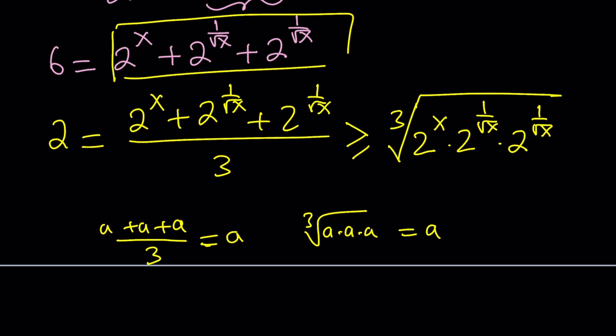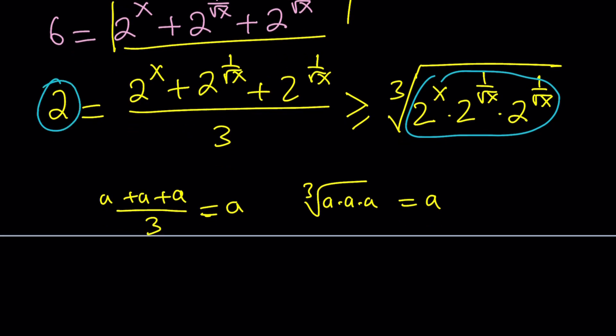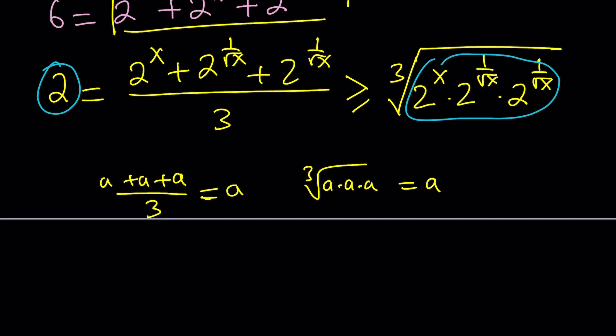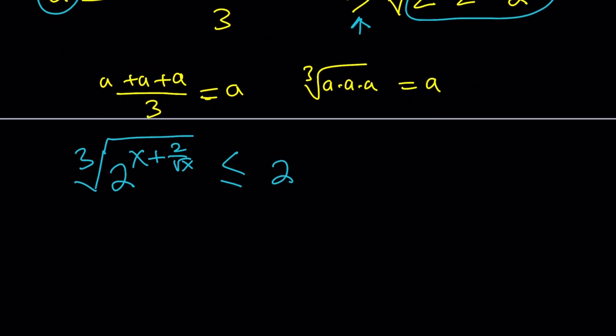So, from here, what am I getting? First of all, I do have a 2 all the way on the left and some radical expression all the way on the right. Let's go ahead and combine these by adding the exponents and then set the inequality. So, we get the cube root of 2 to the power x plus 1 over square root of x plus 1 over square root of x, which is going to give us 2 over square root of x. And that is going to be less than or equal to 2. Remember, we have to switch the inequality because we're writing the right-hand side on the left-hand side and the left-hand side on the right-hand side. This is one inequality that we got. Let's go ahead and save it for future use.